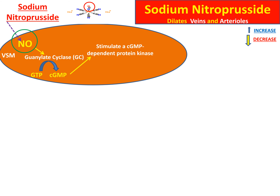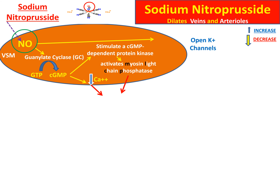The cyclic GMP stimulates specific protein kinase, which activates myosin light chain phosphatase, decreasing the interaction between actin and myosin. Also, cyclic GMP decreases the concentration of calcium inside the vascular smooth muscle. In addition, nitric oxide opens potassium channels, so potassium flows out, leading to hyperpolarization.